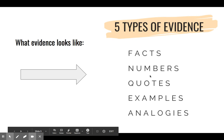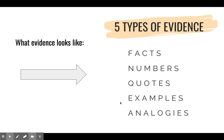These are our five types of evidence that we looked at last week: facts, numbers, quotes, examples, and analogies. Like I said last week, you could pick and choose — you don't have to have all of these represented in your argument. But if you do, and they're really good examples of any of these five types, it's only going to make it stronger.